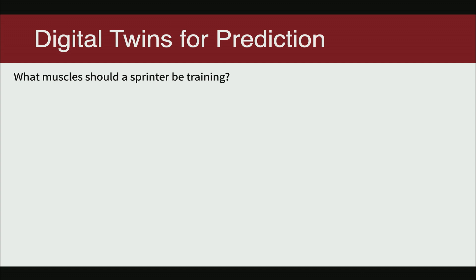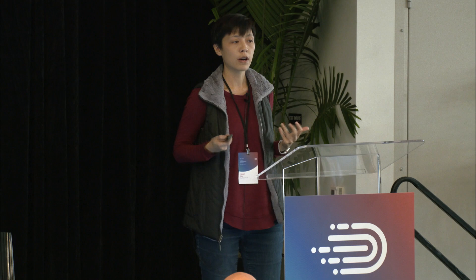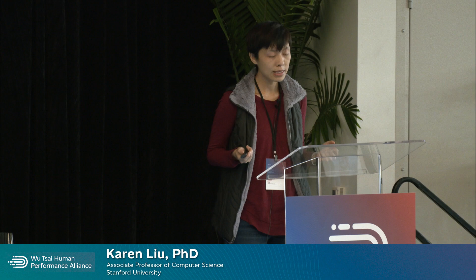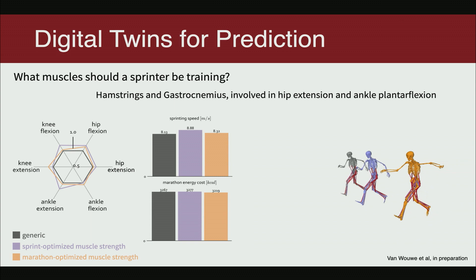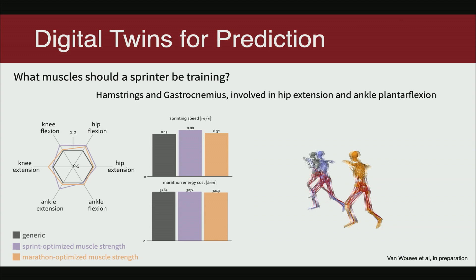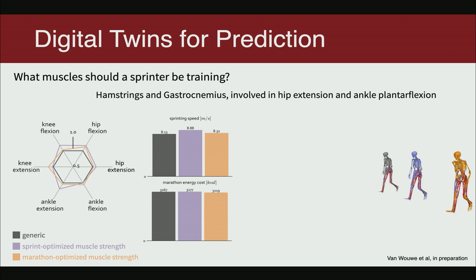We can further ask questions like: what muscle groups should we focus our training on if we want to improve sprinting capability? The answer is we should focus on hamstrings and gastrocnemius, because those are involved in hip extension and ankle plantar flexions. In this simulation, the blue skeleton in the middle shows that after target muscle training, a generic skeleton can improve its speed by 8%. These questions can be answered by the digital twins that we build.